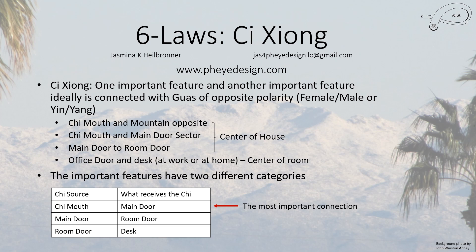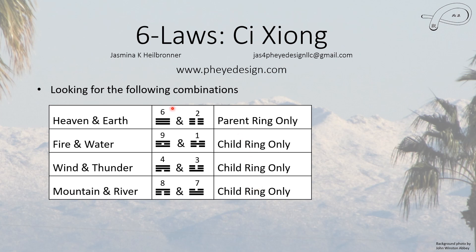The important features are stepped down, just like Chi flow in a house. First and most critically, the Chi mouth must be locked and must have a link to the main door — if you don't have this connection, the rest is irrelevant. If you do have it, then you can look at main door to room door, and then room door to the desk or most important object. The combos you're looking for are: heaven and earth, which only occurs on the parent ring; and fire and water, wind and thunder, and mountain and river, which only occur on the child ring.